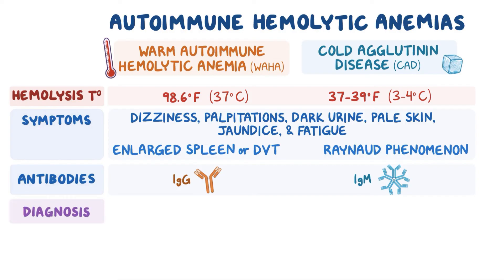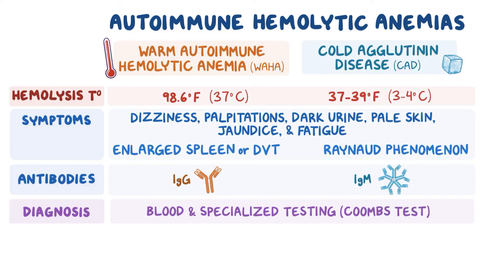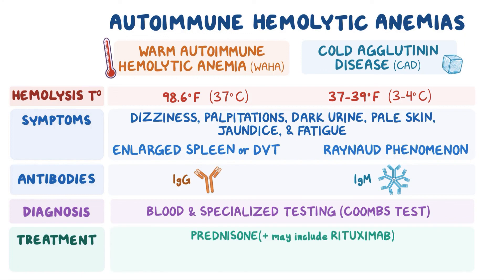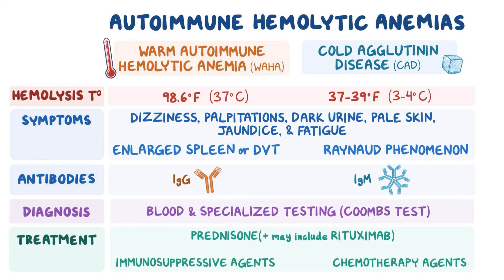Diagnosis involves a thorough clinical examination including blood and specialized testing. These tests identify the presence of anemia resulting from hemolysis. The Coombs test confirms the presence of autoantibodies associated with WAHA or CAD. Treatment is supportive and varies based on symptoms. Therapy includes prednisone and may include rituximab alone or in combination with other agents, such as immunosuppressive agents in WAHA and chemotherapy agents in CAD. Severe cases may necessitate blood transfusions.